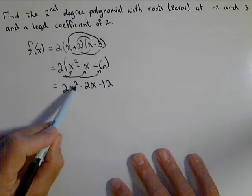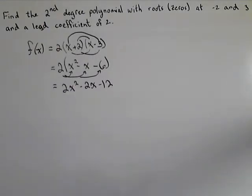So we see we have a second degree polynomial because the two is our highest exponent.